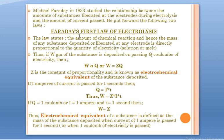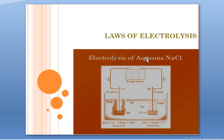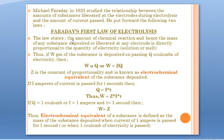Michael Faraday, in 1833, tried to study the relationship between the amount of substance liberated during electrolysis and the amount of current passed. To study this quantitative relationship — kitana amount of substance is liberated at the electrode and what current is passed — he gave us two laws known as Faraday's laws of electrolysis.